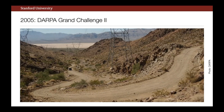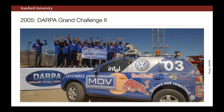DARPA did the same thing again in 2005, changing the course slightly — the most challenging section, Beer Bottle Pass in the Mojave Desert, was moved to the end so that if vehicles didn't finish, DARPA could at least show progress. Fortunately, a number of vehicles made it to the finish line. Stanford won in 2005, passing both Carnegie Mellon vehicles. It was a stationary race — no interaction with other traffic. If one vehicle encountered another, DARPA would stop the slower vehicle so the faster one could pass.